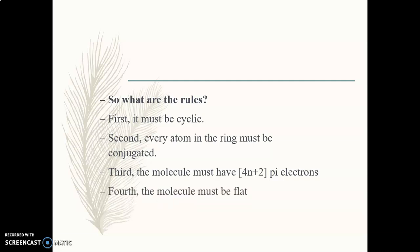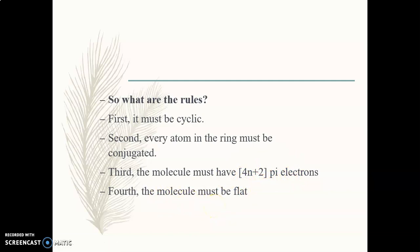The fourth rule is the molecule must be flat. If a compound satisfies the first three rules but does not satisfy the fourth rule, that compound is also considered non-aromatic. So these are the four rules: first, the compound must be cyclic; second, every atom in the ring must be conjugated; third, the molecule must have 4n+2 pi electrons — this is known as Hückel's rule; and fourth, the molecule must be flat.